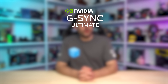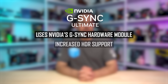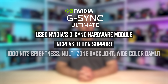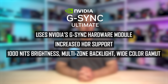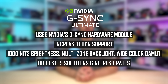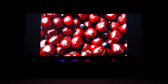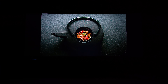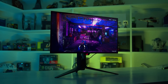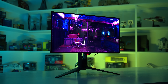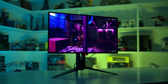G-Sync Ultimate refers to monitors using the G-Sync module that also support an increased level of HDR. NVIDIA says these monitors have 1000 nits of brightness, multi-zone backlights, and wide color gamut support, along with the highest resolutions and refresh rates, in addition to the benefits of G-Sync monitors with the G-Sync module. At one point, G-Sync Ultimate guaranteed true HDR support by mandating full-array local dimming LCD backlights or OLED panels, but this was diluted several years ago and now also includes edge-lit panels, so it's less of a good indicator of top-tier HDR. G-Sync Ultimate monitors are rare these days, with many true HDR products including most OLEDs using regular scalers instead.